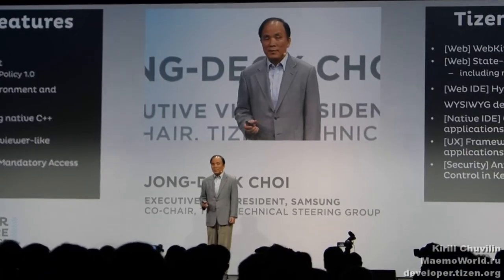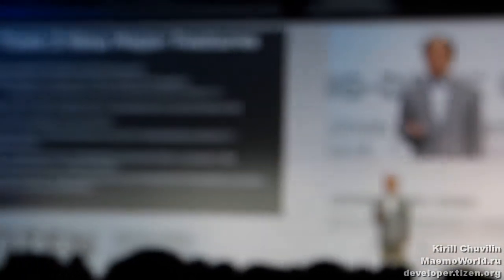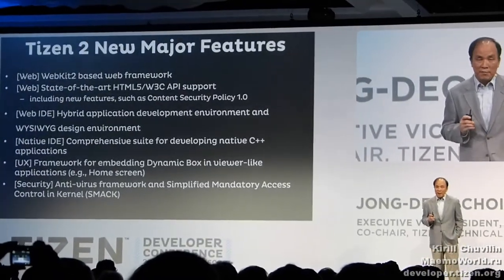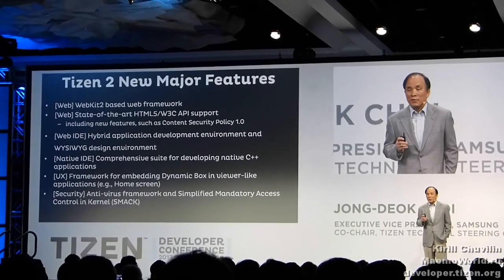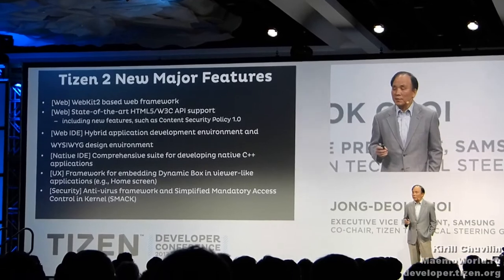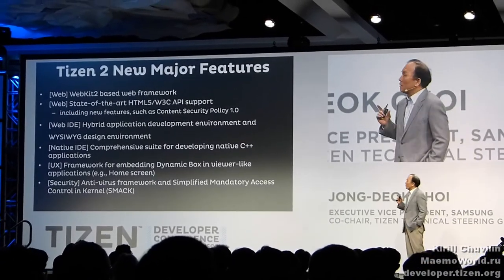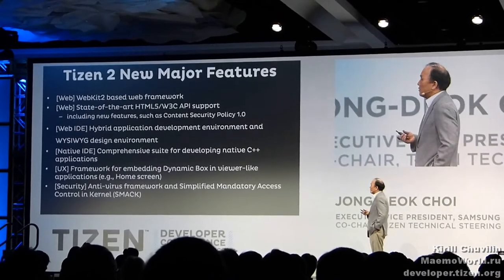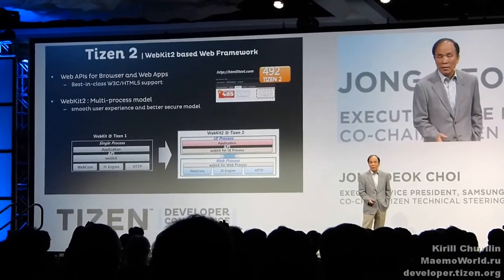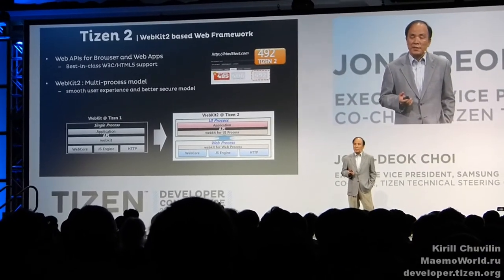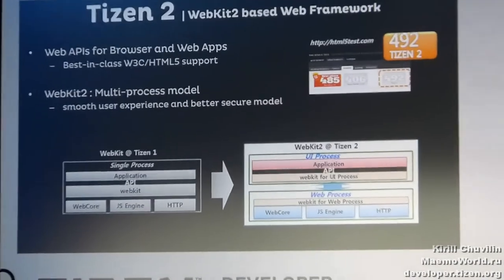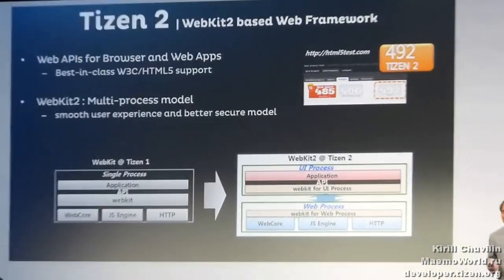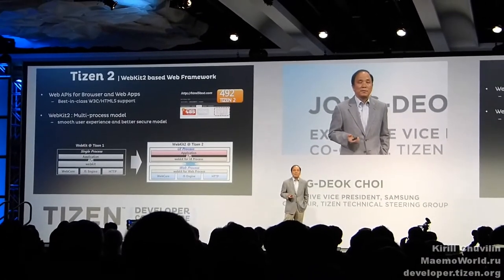About a year ago we released Tizen 1.0. Since then, we have improved Tizen quite a lot. The execution speed has gotten much faster, the memory footprint has gotten much smaller, and we have added quite a few exciting new features in areas such as the web, the IDE, the UX, and security. Tizen 2's support for W3C HTML5 is the best among all browsers, scoring 492 out of 500 at the html5test.com benchmark site.